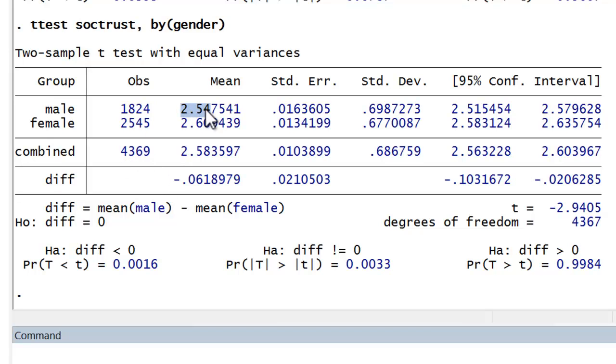Here we see the mean value of social trust for males, the mean value for females, the mean values for the entire sample, and most importantly, the difference in means between males and females. Now, notice that this is a negative value, and that results from